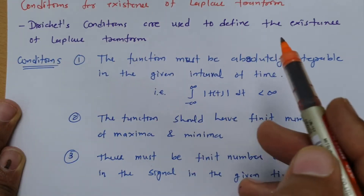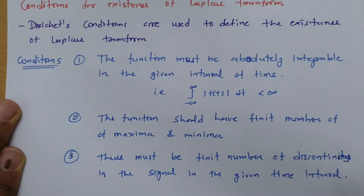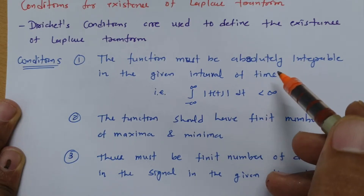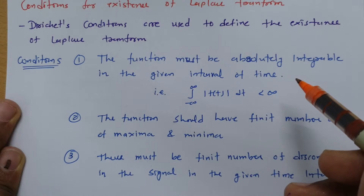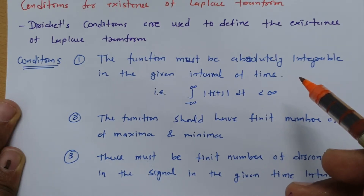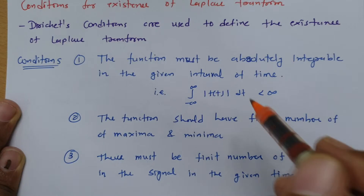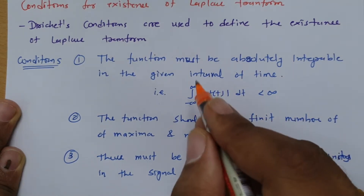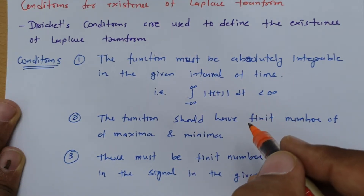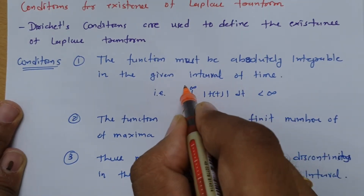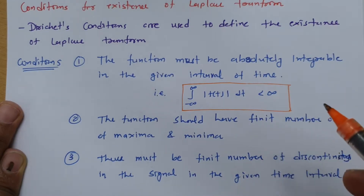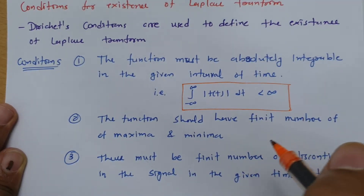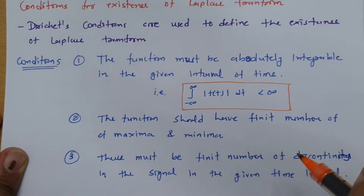Dirichlet's conditions are used to define the existence of the Laplace transform, and there are three conditions. The first condition is that the function must be absolutely integrable over the given time interval. If the function is absolutely integrable, then the integral from minus infinity to infinity should have a finite value, and in that case one can say that the Laplace transform exists.